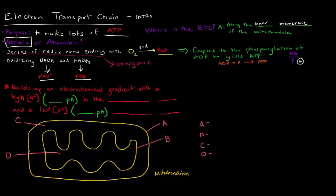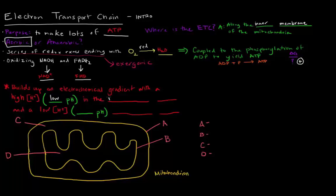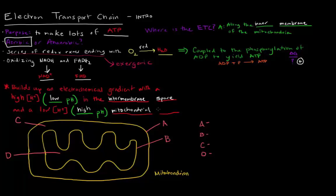So how exactly does that even happen? The electron transport chain is supposed to build up an electrochemical gradient with a high H+ concentration at a low pH in the intermembrane space, and a low H+ concentration — which would be a high pH — in the mitochondrial matrix.